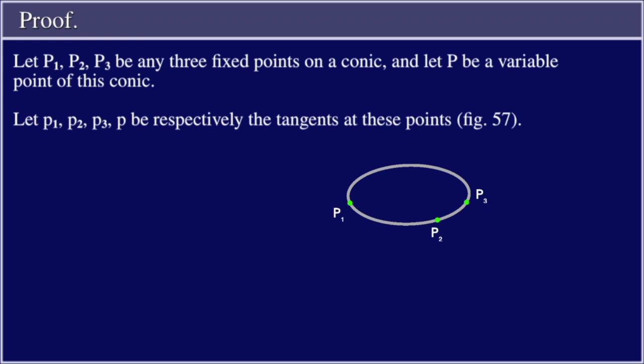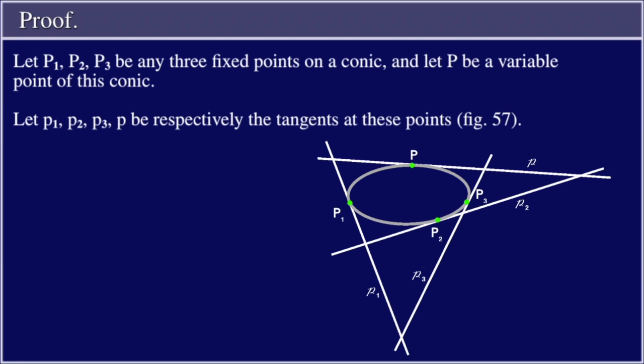The tangents to a point conic form a line conic. Proof: Let P₁, P₂, P₃ be any three fixed points on a conic, and let P be a variable point of this conic. Let p₁, p₂, p₃, p be respectively the tangents at these points (Figure 57).